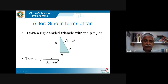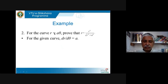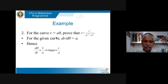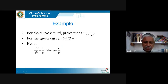I'll show you more examples to make it clear. For the curve r = aθ, we want to prove p = r²/√(r² + a²). Since r = aθ, dr/dθ = a clearly. Differentiating with respect to r gives 1 = a·(dθ/dr), so dθ/dr = 1/a. Therefore tanφ = r·dθ/dr = r/a.